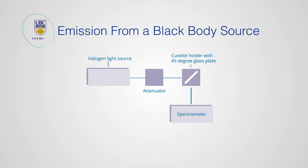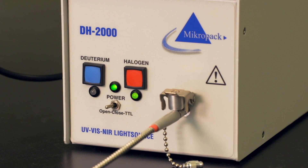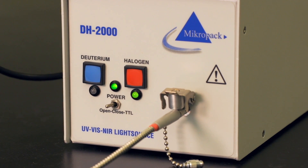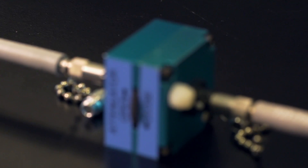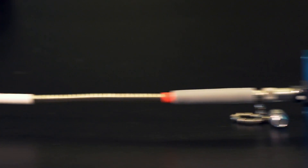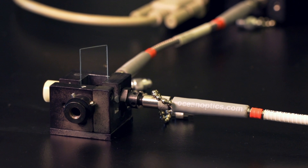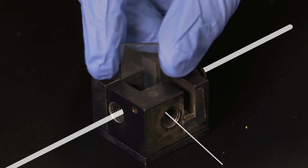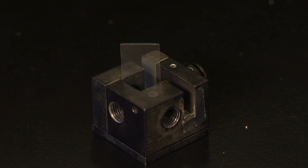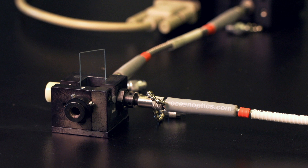This configuration is used to collect a reference spectrum that will later be used to correct the measured fluorescence signal. The light source used here is a tungsten halogen lamp. The light beam travels through the fiber optic cable, reaches the attenuator, and then the cell. A glass plate placed at a 45 degree angle redirects a small fraction of the light beam perpendicular to its original pathway. The light beam then passes through a collimating lens, through another fiber optic cable, and into the spectrometer where it is detected.